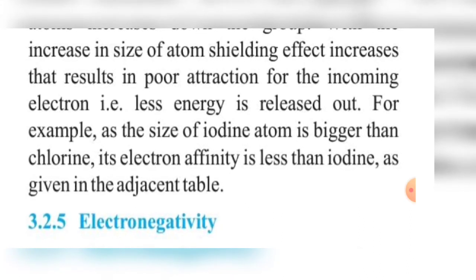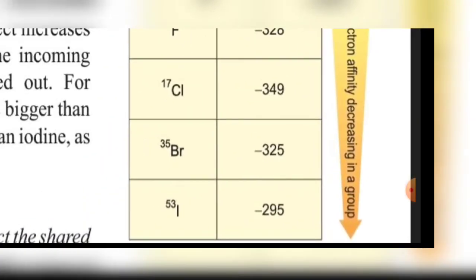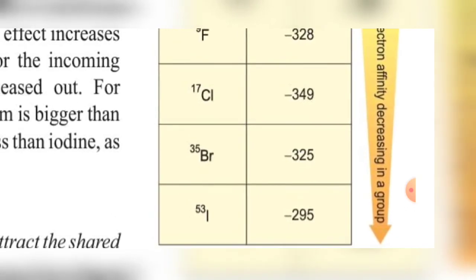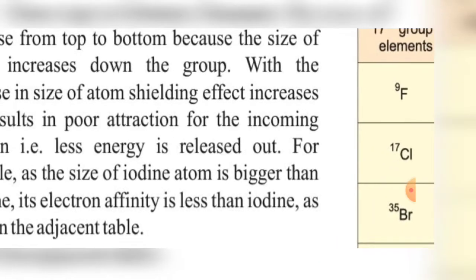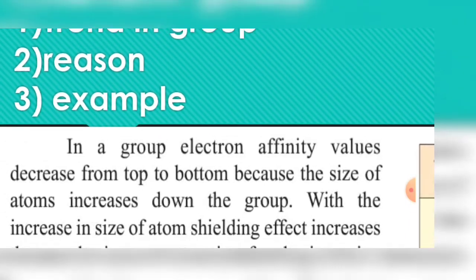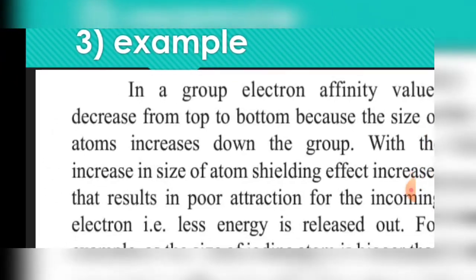For example, the size of the iodine atom is bigger than chlorine, so its electron affinity is less than that of chlorine. As shown in the table, iodine has minus 295 kJ/mol and bromine has minus 325 kJ/mol of energy released when we add an electron to the outer shell. This completes long question 9.